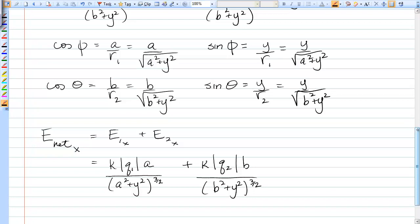And then the Y component doesn't look too different. That's the magnitude of the first one, and now I've got a Y instead of an A, but I still have the 3 halves on the bottom, and I have a minus here, because the Y component of E2 points down, B squared plus Y squared to the 3 halves. And that's our final answer.